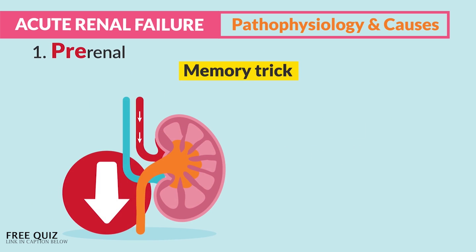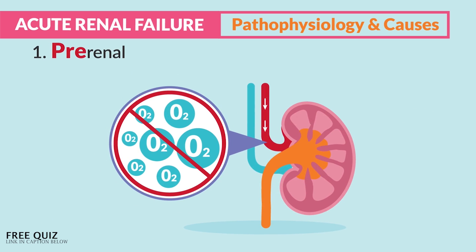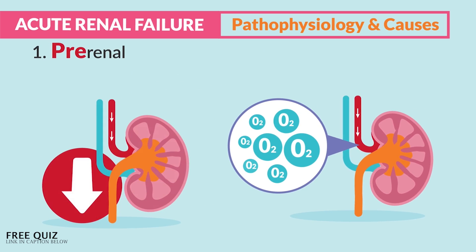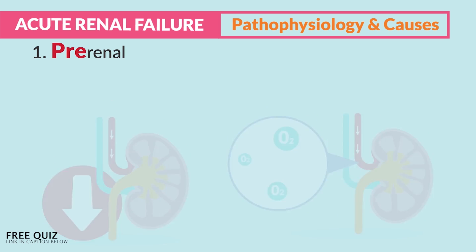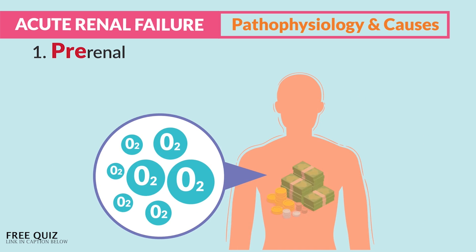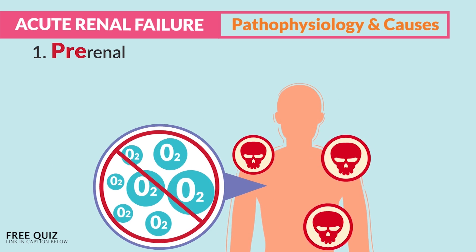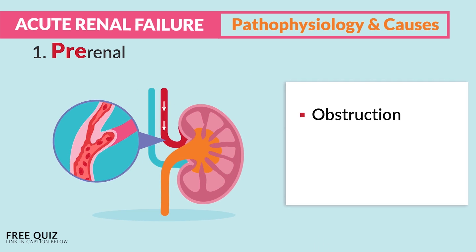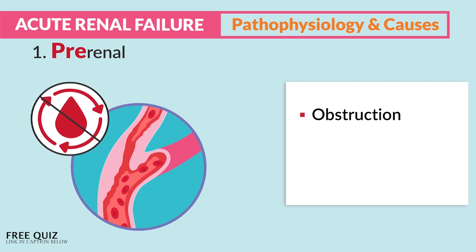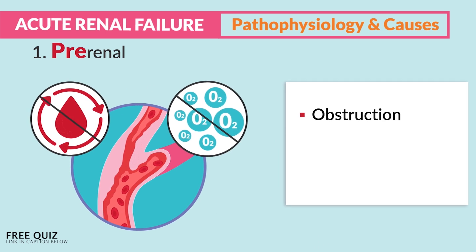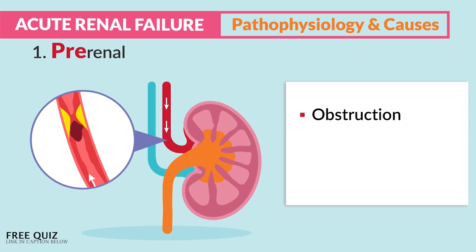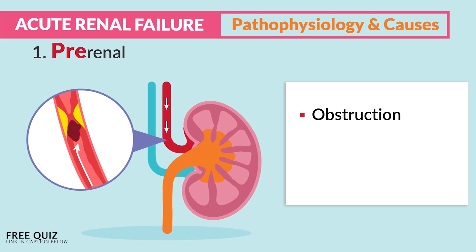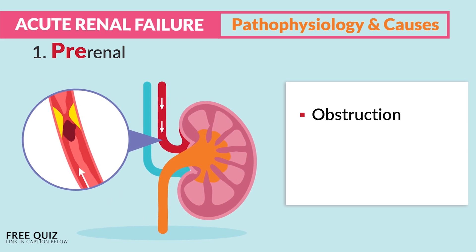For pre-renal, think decreased perfusion — oxygen-rich blood flow can't get to the kidneys. Decreased blood flow means decreased oxygen. Remember, oxygen is the money of the body — no money, no honey; no oxygen and the body goes broke. This is typically caused by obstruction or vessel occlusion, a blockage of blood flow from an emboli, blood clot, or tumor that blocks perfusion into the kidneys.